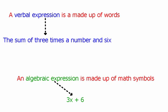What do these two terms mean? A verbal expression is just an expression that's made up of words — it's a way of describing math relations using normal everyday English words. So for example, we've got 'the sum of 3 times a number and 6.' We're representing math using an English language sentence. On the other hand, an algebraic expression is made up of math symbols, like this algebraic expression down here.